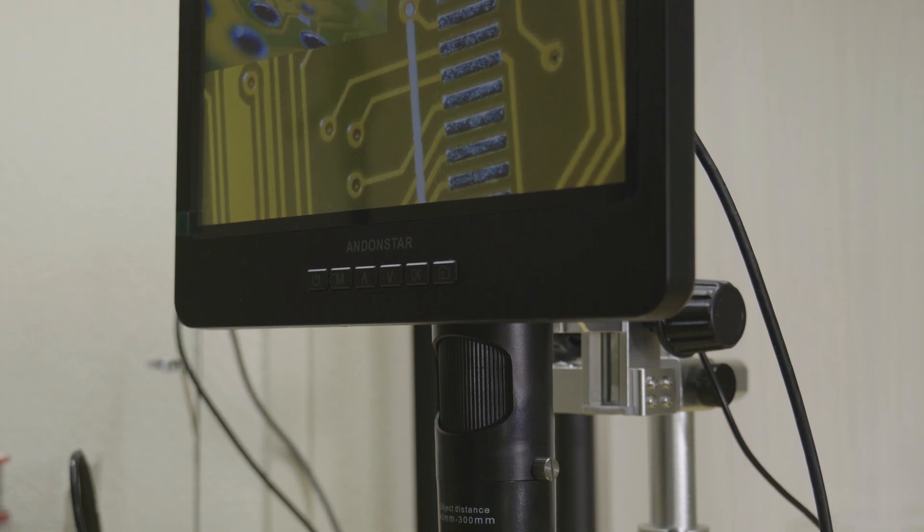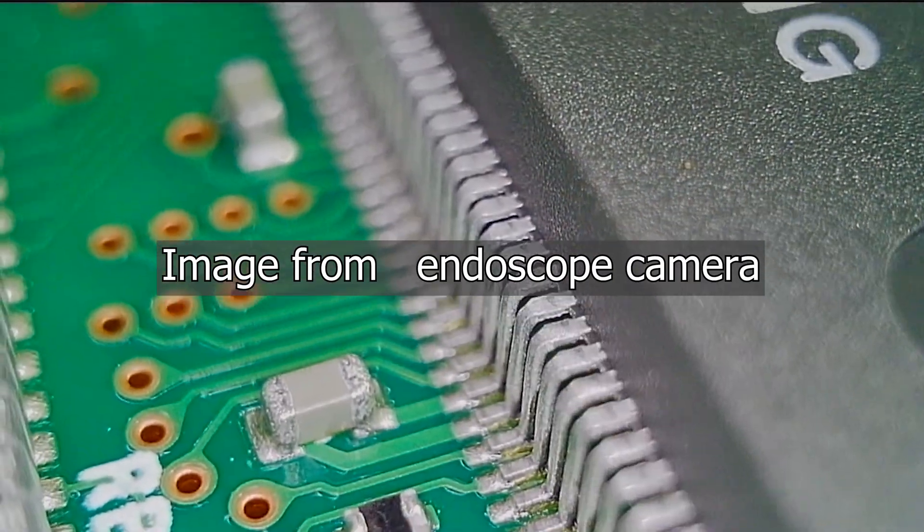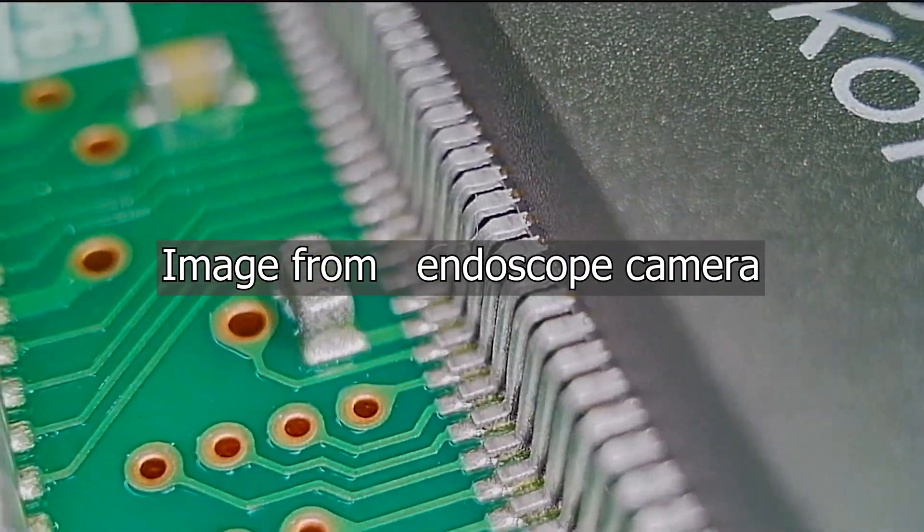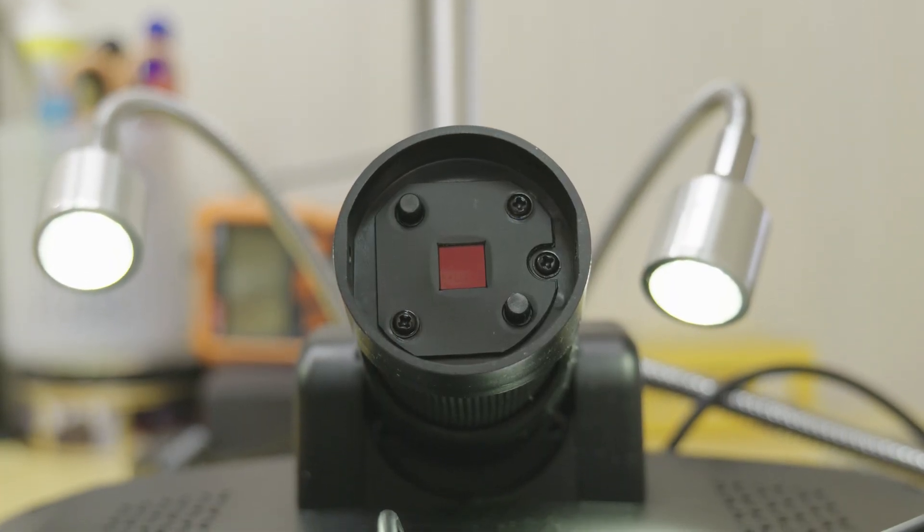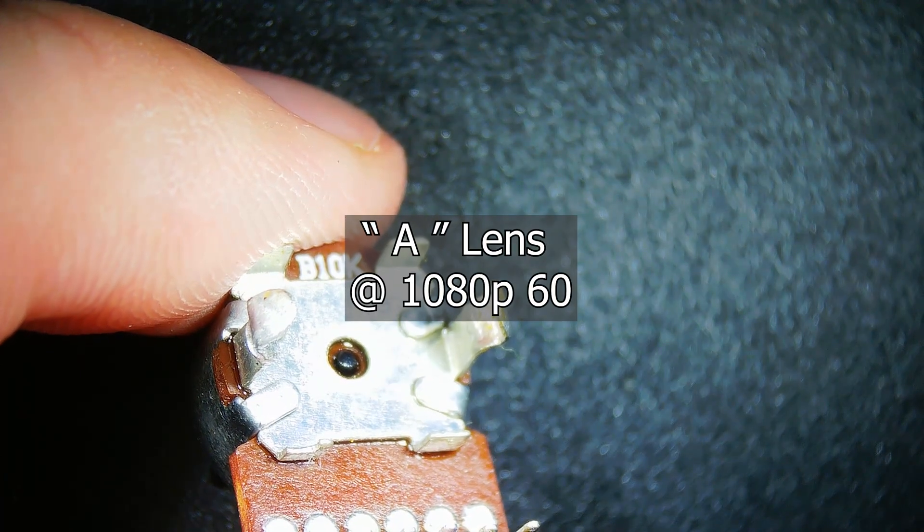As for internal recording the 249s supports up to 4k 24 fps or it can do 60 fps in 1080p. I'd recommend just using the 1080p 60 option as this is most definitely not a 4k sensor. It's probably closer to a 720p sensor.